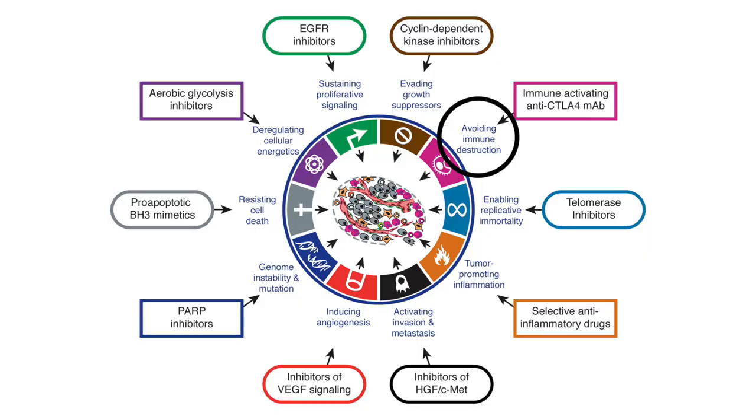Hallmark three is avoiding immune destruction — one of the newer hallmarks, added after the 2000 paper. Our immune system is designed to prevent infection and normally doesn't attack self-cells, a property called tolerance. Tumor cells are derived from normal body cells, but because they acquire so many mutations, they become so different that they're no longer recognized as self — they're recognized as foreign.